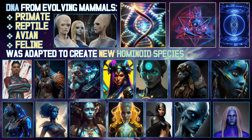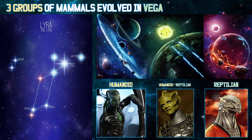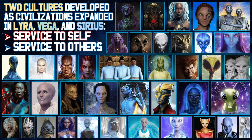DNA from evolving mammals — primate, reptile, avian, feline — was adapted to create new hominoid species. Three groups of mammals evolved in Vega: humanoid, humanoid reptilian, and reptilian. Two cultures developed as civilizations expanded in Lyra, Vega and Sirius: service to self for the good of all, and service to others for the good of all. Today, 80% of civilizations adopt a service-to-others philosophy.